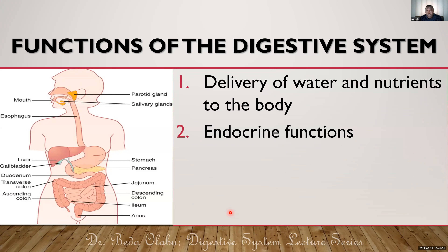We are not limited to the pancreas only. The liver also produces some hormonal substances, and the intestines have cells which produce hormones — we call them gut hormones. So don't limit yourself to the endocrine functions of the pancreas only; the liver and the intestines also have endocrine functions.